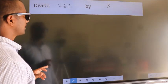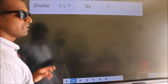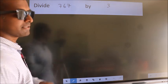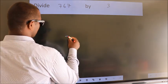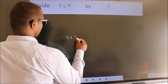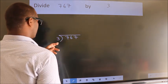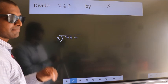Divide 767 by 3. To do this division, we should frame it in this way. 767 here, 3 here. This is your step 1.